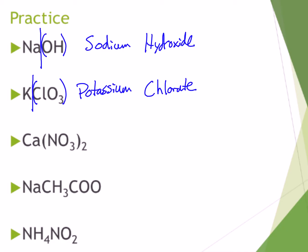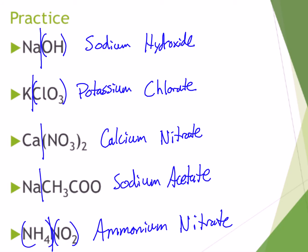Try the last three: calcium nitrate; sodium acetate — which can also be written as C2H3O2; and ammonium nitrite. The last one is tricky because ammonium, NH4+, is the only polyatomic cation we use in this class, so you can't use the capital-letter splitting trick. Recognize that NH4 is ammonium, and NO2 makes it nitrite, not nitrate.